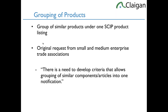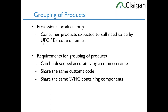Professional products also have some ability to group the saleable items together — the top-level declaration, not just the components. They came from the same SME United request: there is a need to develop criteria that allows grouping of similar components or articles into one notification. Consumer products still have to be at the individual barcode or UPC code level — the consumer picks up the product, reads the barcode, and needs to go from that to the IUCLID listing. Professional products don't have that constraint. The requirements are: products have to be describable by the same common name, share the same customs code, and have the same SVHC-containing components.